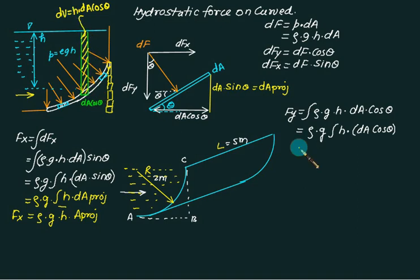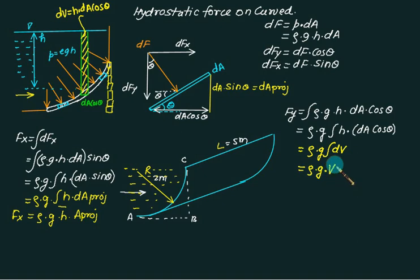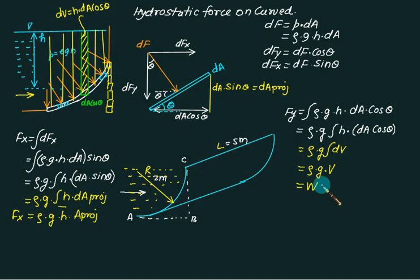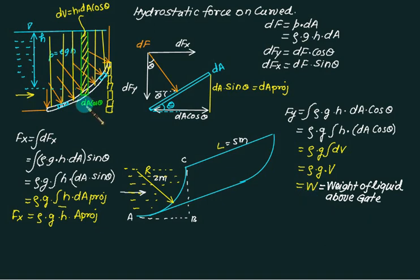Since we have written H as the depth, the volume is above the gate. So Fy equals rho times g times the integral of dV, which equals rho times g times V - the total volume above the gate. This total term is nothing but the weight of liquid above the gate. If you add all such prism elements, it is simply the weight W of the liquid above the gate, and naturally it acts downward.